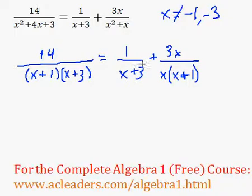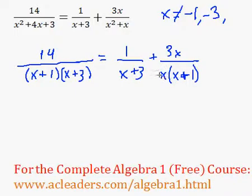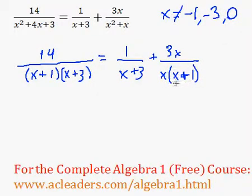Over here, we also have a restricted value of x equals negative 3. And over there, we have just this x by itself, which indicates that we have a restricted value of just 0 for x, because 0 times anything would be just 0. And finally, x plus 1 — the restricted value would be just negative 1, so I don't need to write it again.